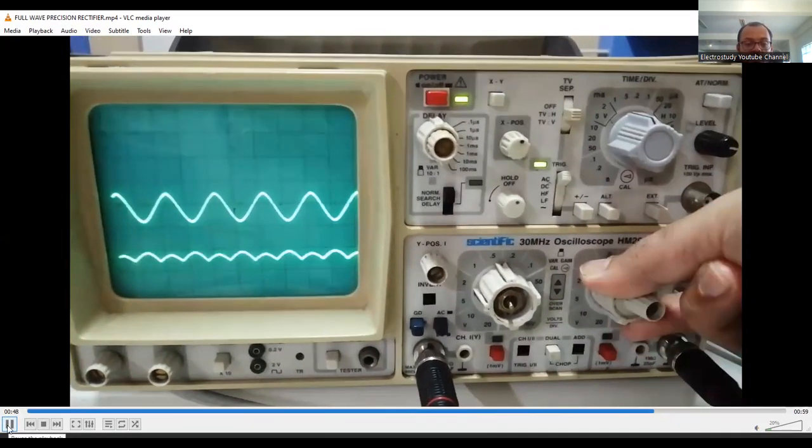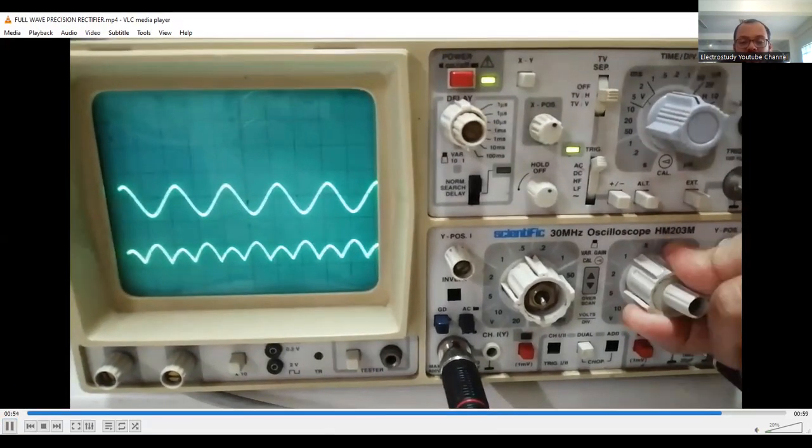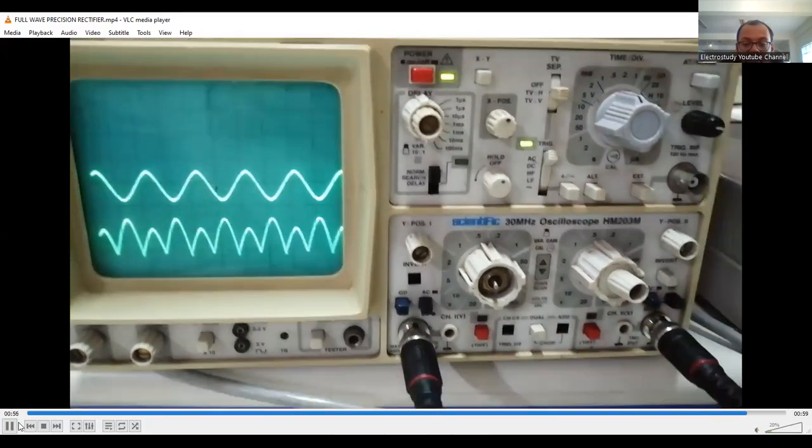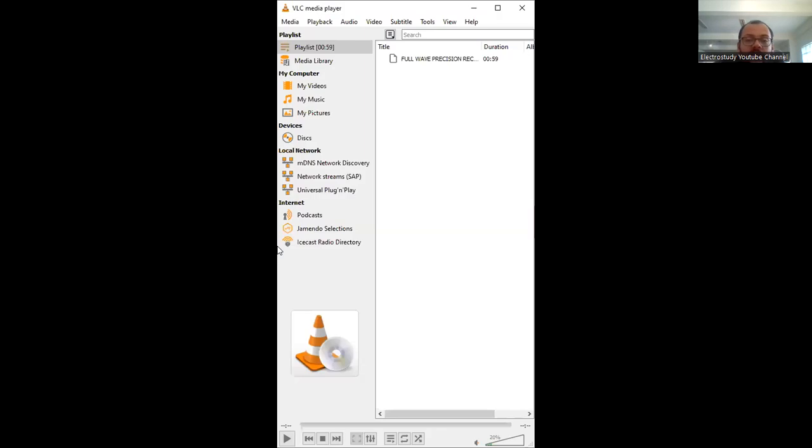Accordingly, you have to measure the parameters which I have shown you in one table. That is only about this particular experiment. I think the concept is clear to everybody. We are providing the sinusoidal waveform and we should get a rectified output as a DC waveform. That is a summary of the experiment.